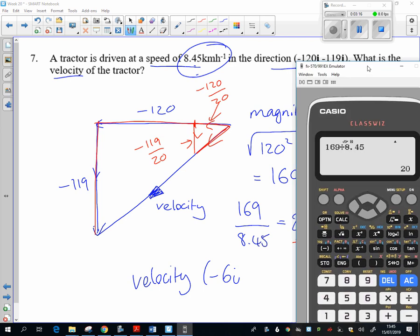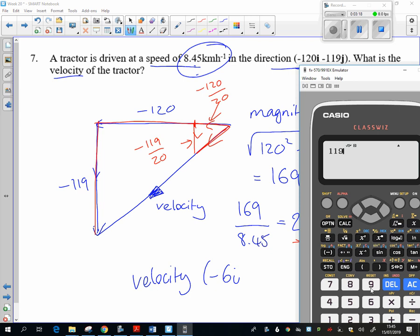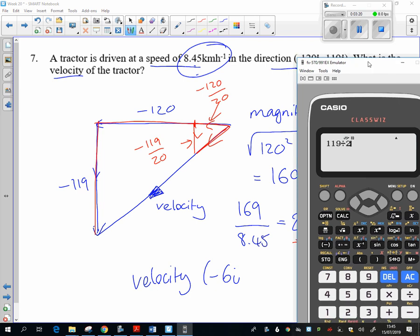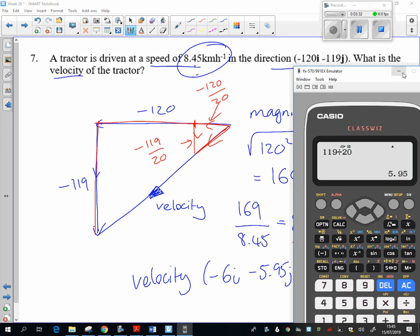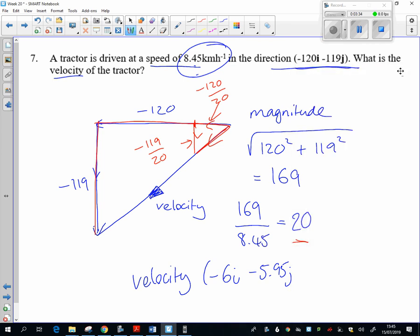Right, let's do 119 divided by 20... 5.95, and that's also a minus. And then let's just get that out of the way. And then that does have units, that's 6 kilometers per hour.